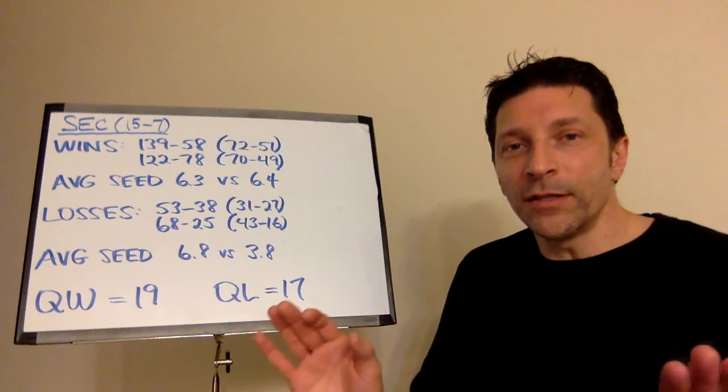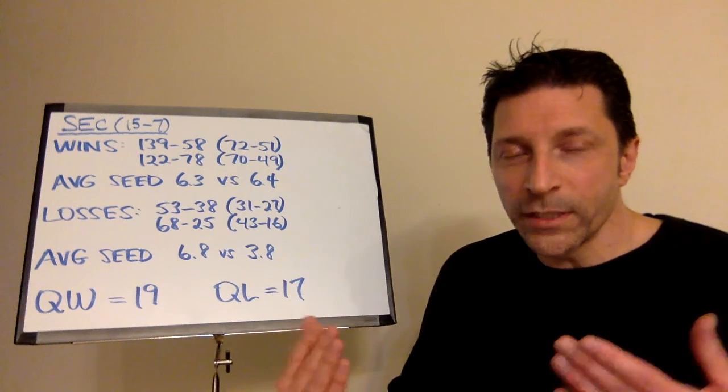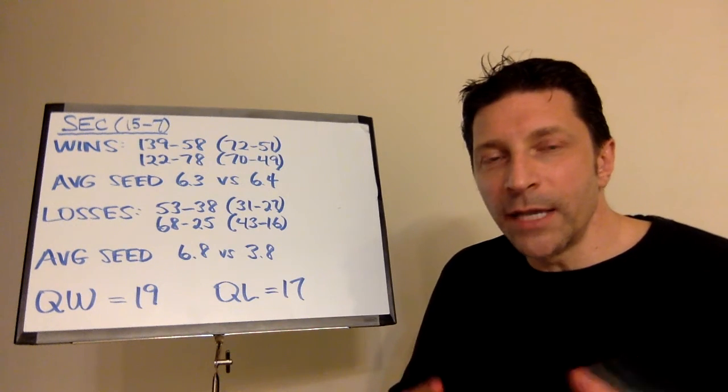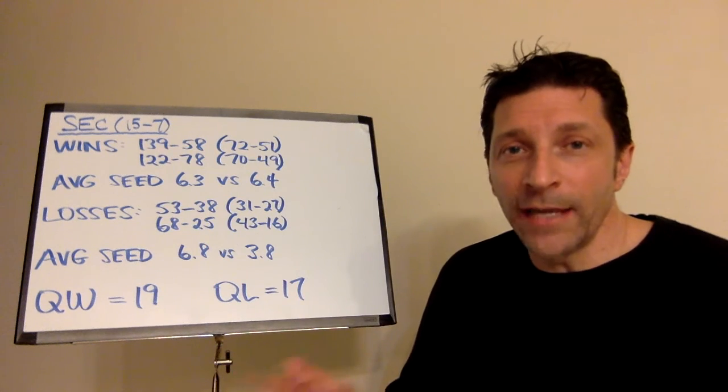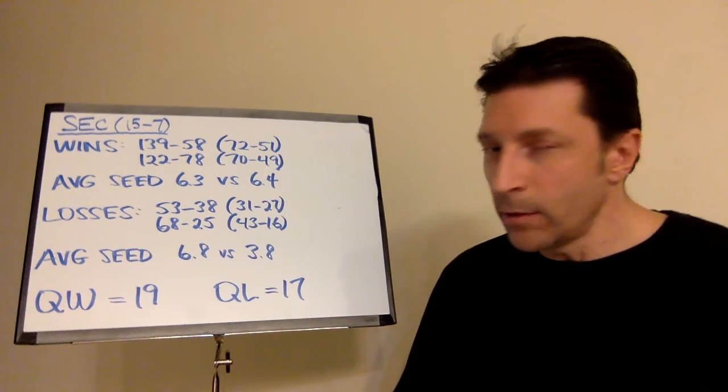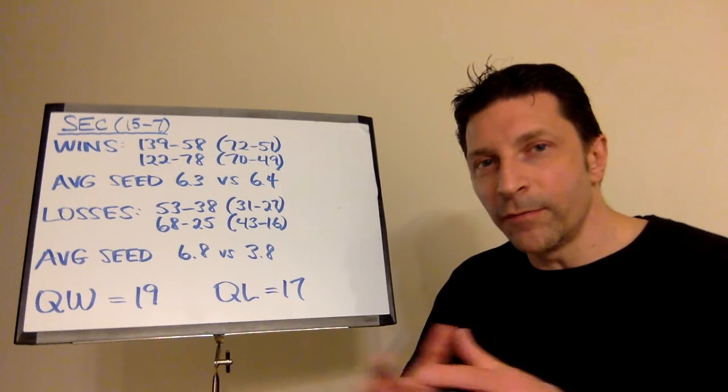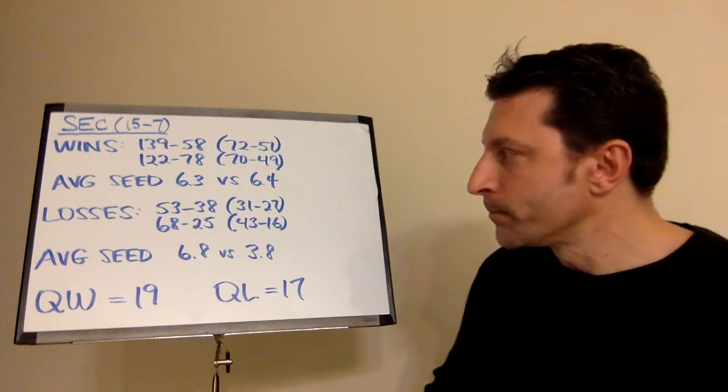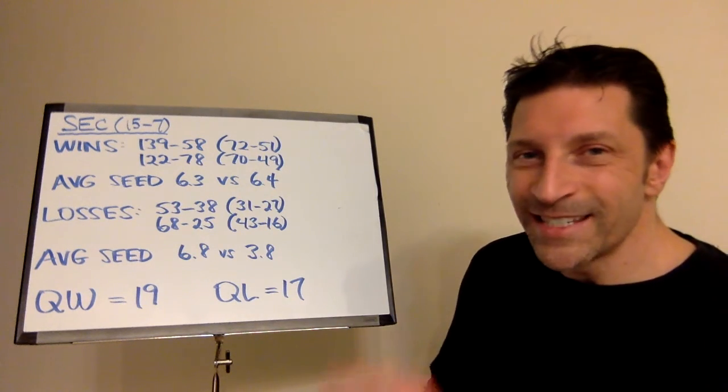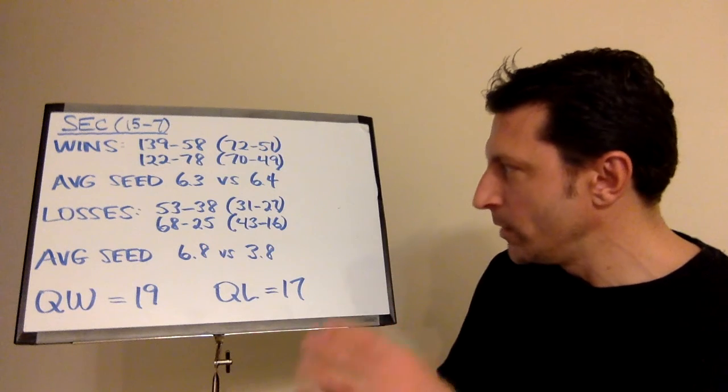The average-seeded team that won those 15 games in the SEC was a 6.3 seed in the SEC. So, we seed all the teams in each conference. 1-14 in the ACC, the Big 10, and the SEC. 1-10 in the Big 12. 1-12 in the Pac-12. Then we have to adjust the seeds so that they're fair and even and comparable. We have to make that slight seeding adjustment. And we do.